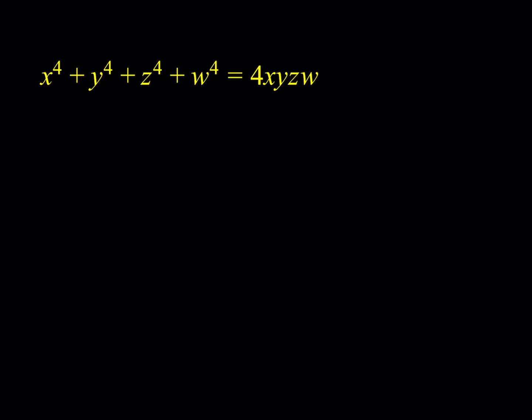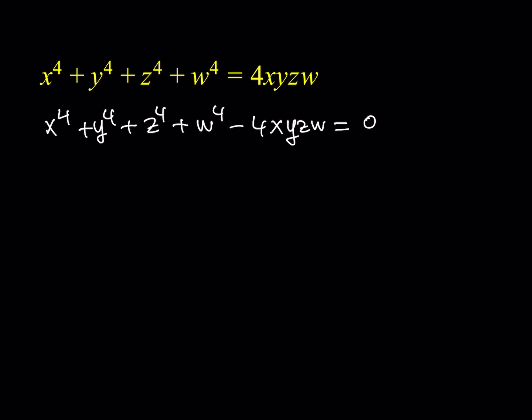The first thing I'm going to do is get everything on the same side so that I can get a zero. So it's going to look like x to the fourth plus y to the fourth plus z to the fourth plus w to the fourth minus 4xyzw is equal to zero. This equation doesn't really make much sense as-is, but we're going to be able to manipulate it in an interesting way. After I'm done with the first method, I'll show you the second.